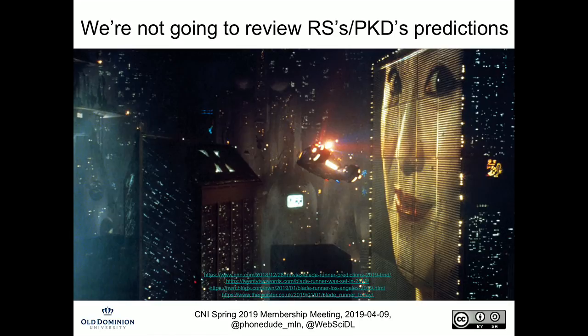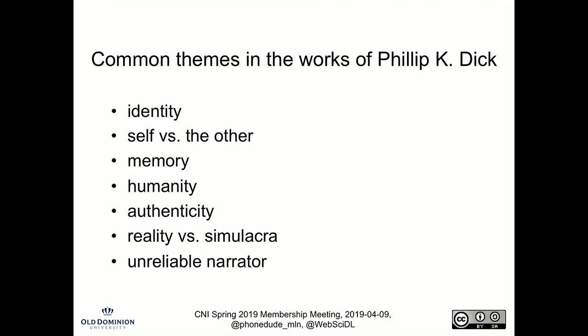We're not going to talk about flying cars. What I'm going to tie back to is the larger canon of Philip K. Dick's work. A lot of the themes he covers are about identity, the relationship between self and the other, memory, the essence of humanity, what it means for something to be authentic, the difference between reality and simulation, and the concept of an unreliable narrator.